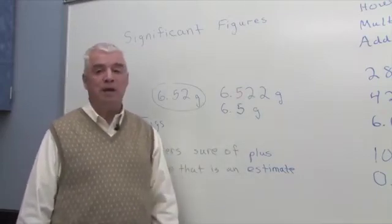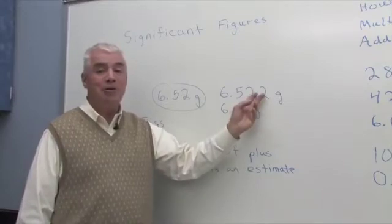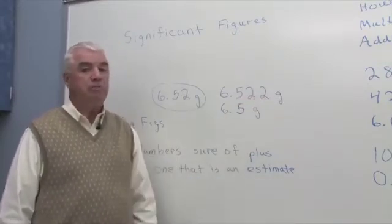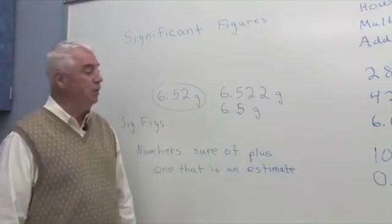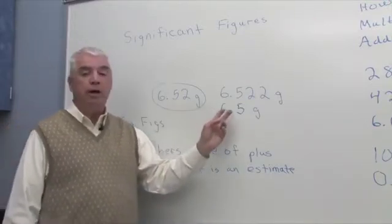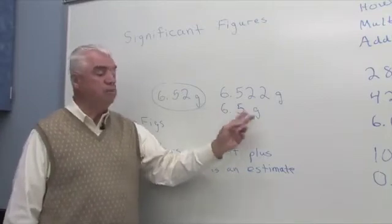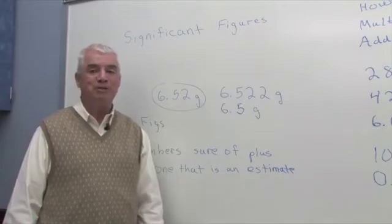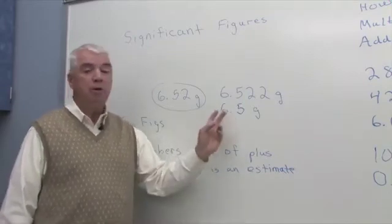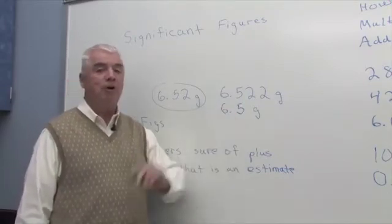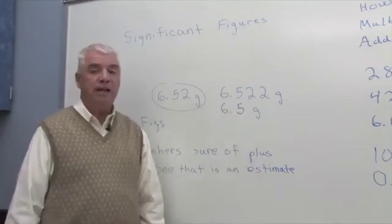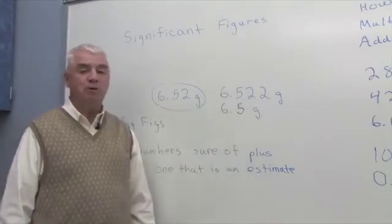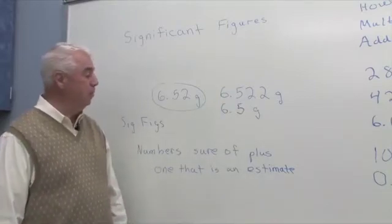So this 2 could be an 8, could be a 7, it might be a 2, but we really don't know what it is. So it's misleading to put that 2 out there. In the same way, if someone else came along and recorded 6.5 grams, that isn't giving as much information as we could. These two numbers are significant, they have value and meaning, but we can really get one more decimal place. And so both of these would represent errors in recording meaningful numbers.